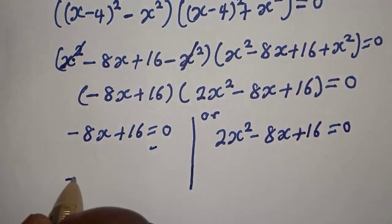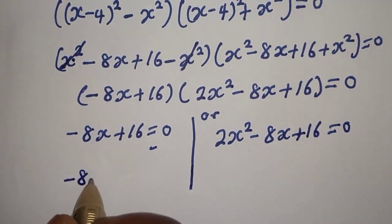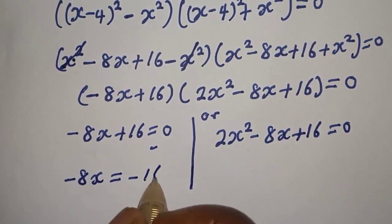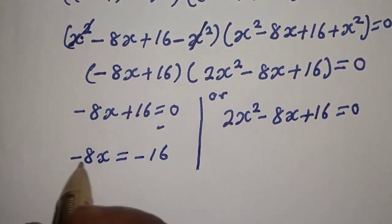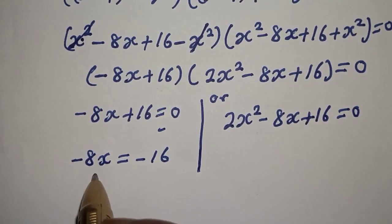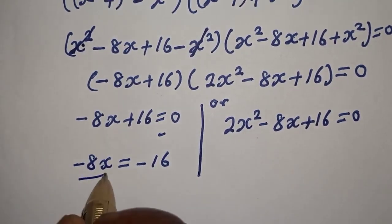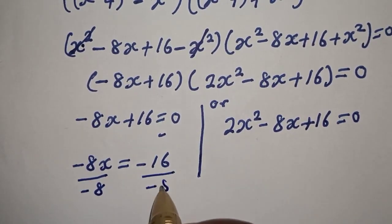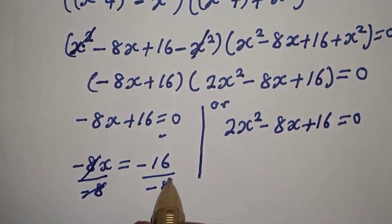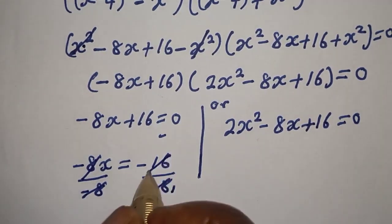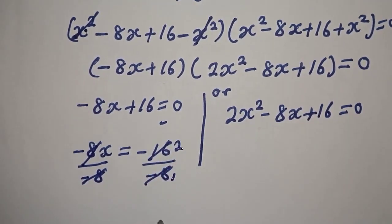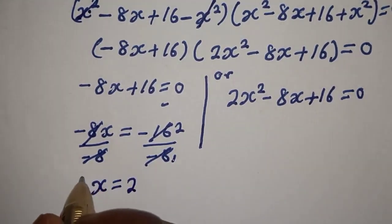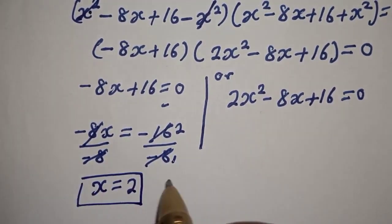From the first case, minus 8s is equal to minus 16. Dividing both sides by minus 8 gives s is equal to 2. This is the first value of s.